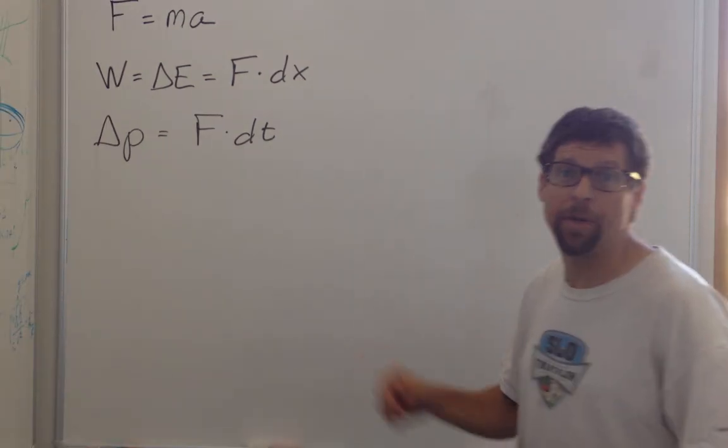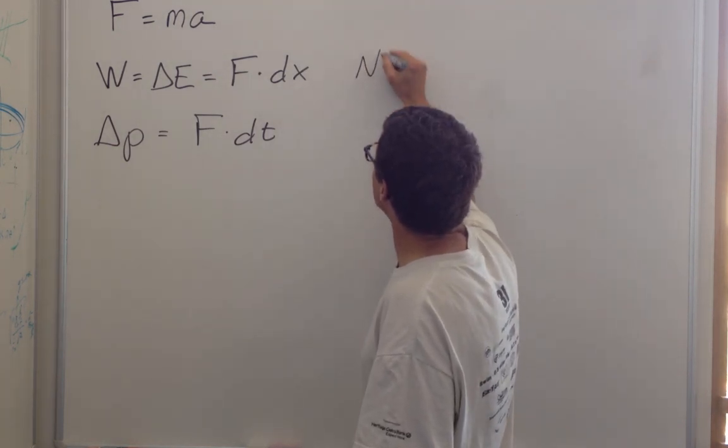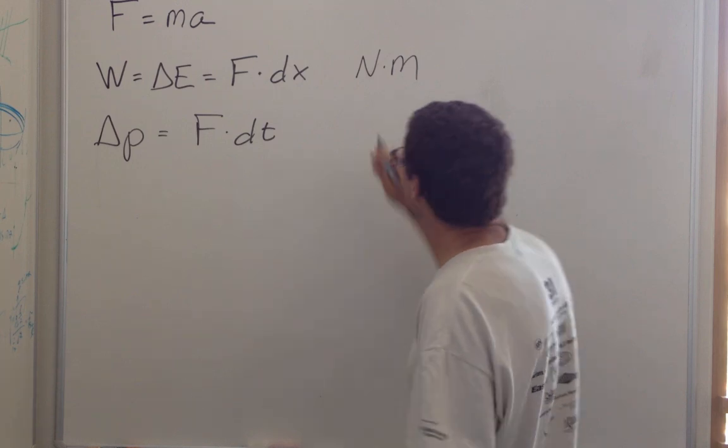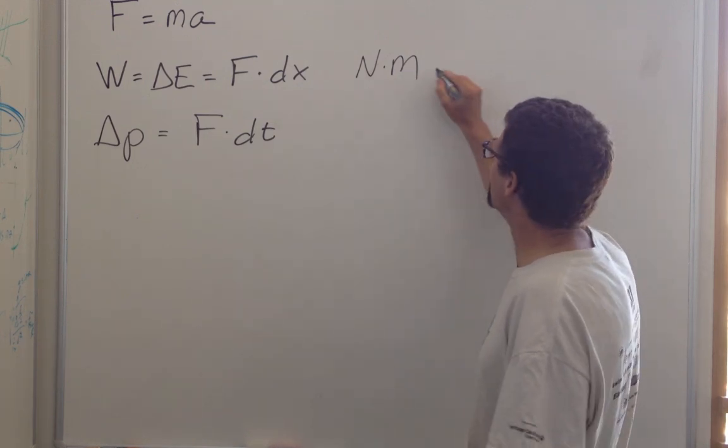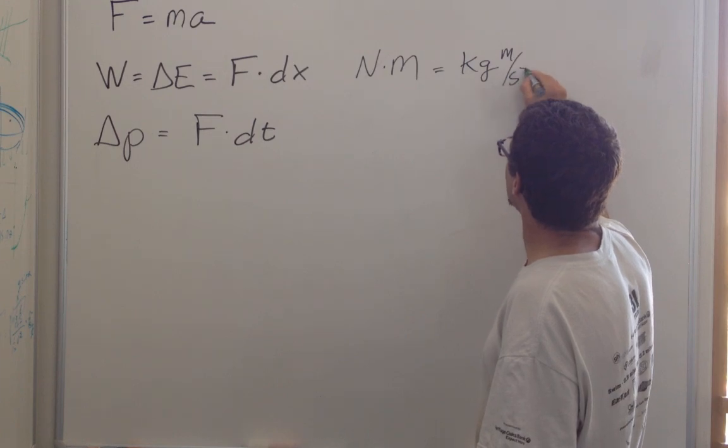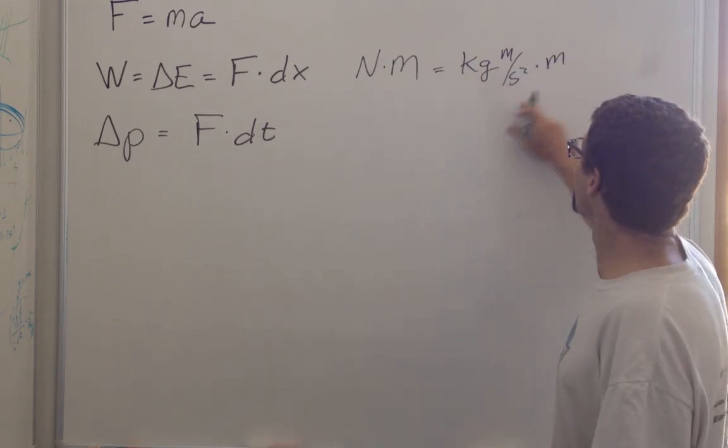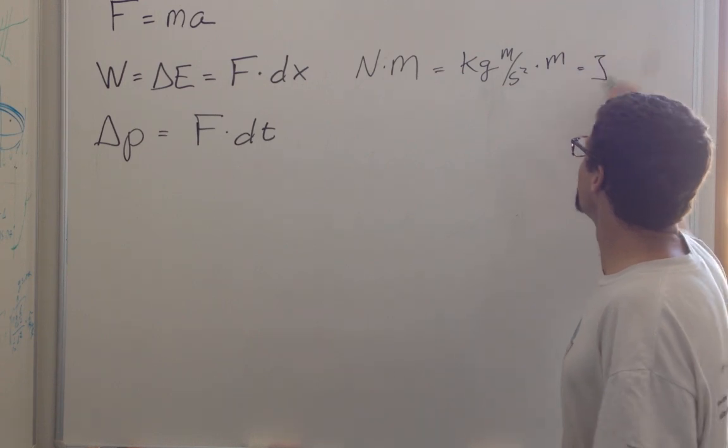Let's check units. Force times distance, that would be a newton times a meter. A newton meter is a joule unit of energy. Or a newton is a kilogram meter per second squared times meter. A kilogram meter squared per second squared, yeah, is a joule unit of energy.